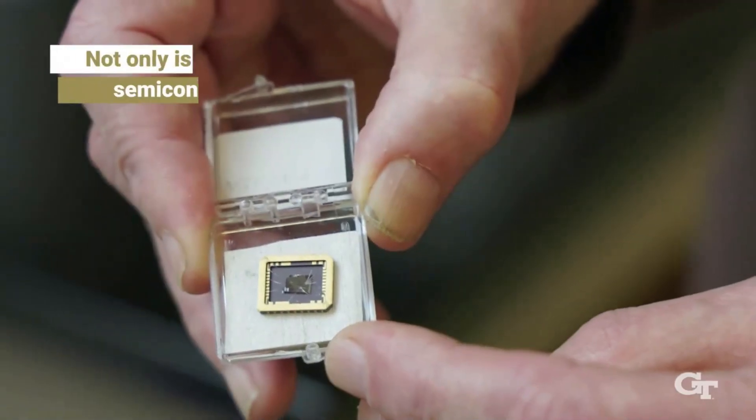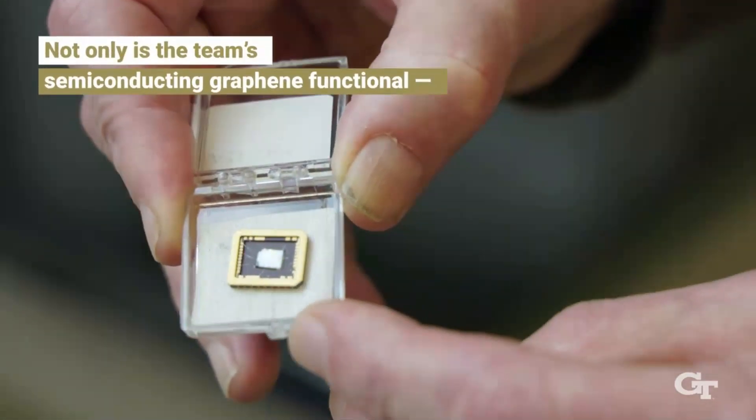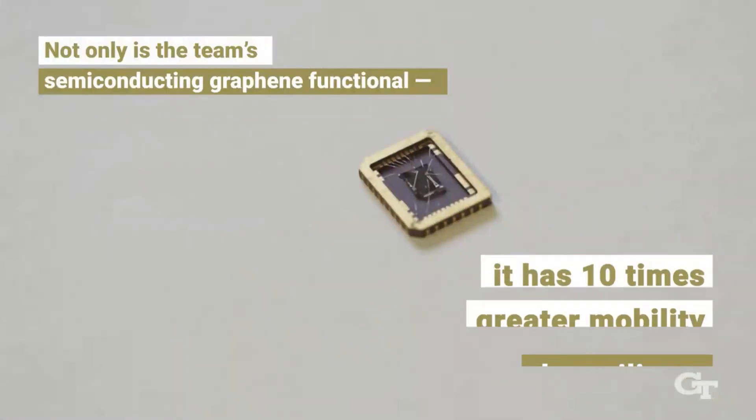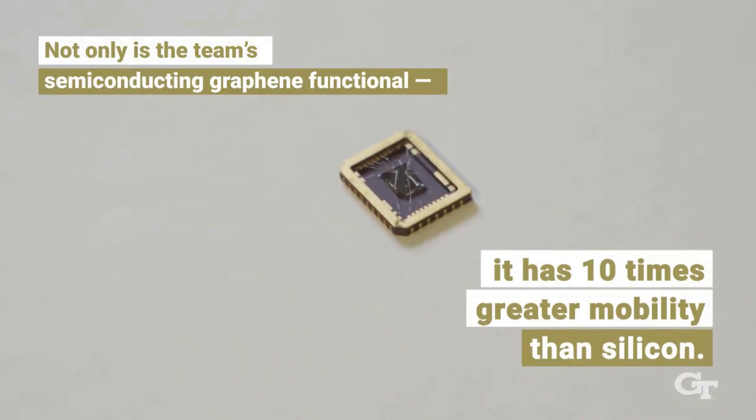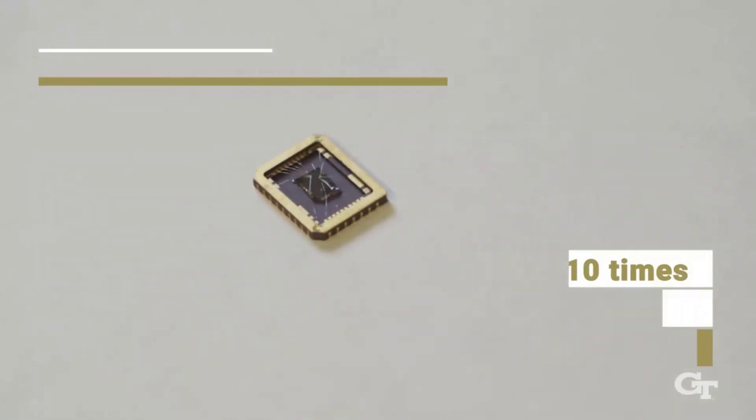According to the team's measurements, the mobility of their graphene semiconductor is 10 times higher than that of silicon. To put it another way, extremely little resistance exists between the electrons and their movement, which leads to faster computation in electronics.